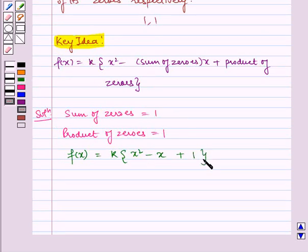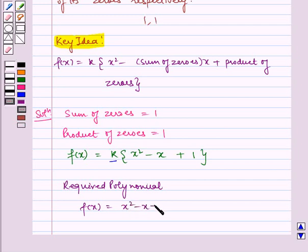So 1 plus 1. Now, if we take k is equal to 1 to satisfy our sum and product of zeros, we get our required polynomial as f of x equals x square minus x plus 1.